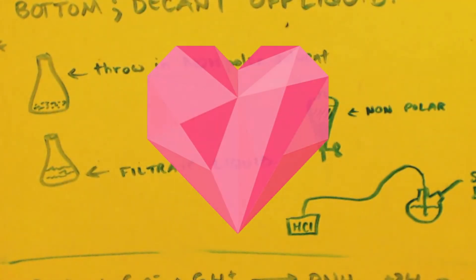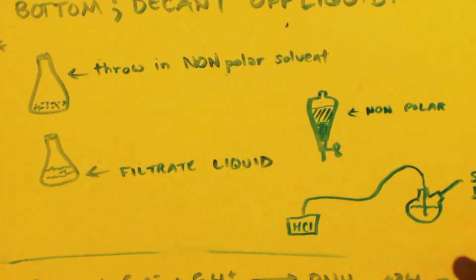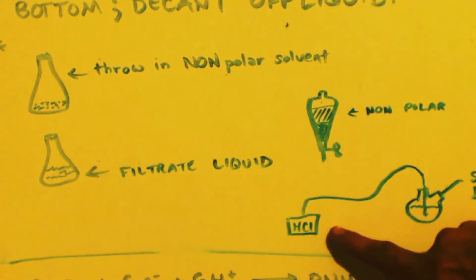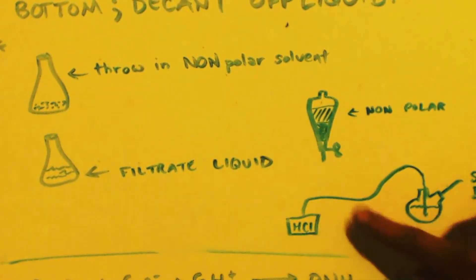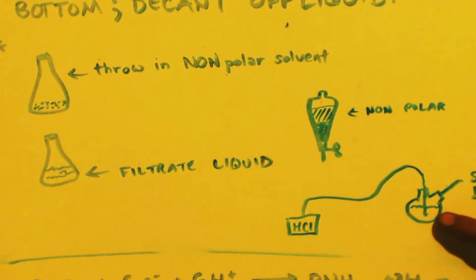Now take your mother liquor. You can see how I have it set up here. This is just a generic box, but it would be a sep funnel dripping hydrochloric acid onto sodium chloride table salt. That makes HCl gas, which would be forced through this tube down to the bottom of this liquid.